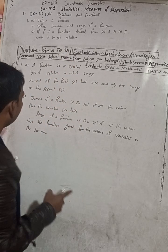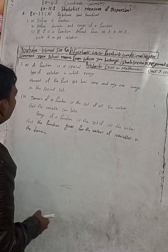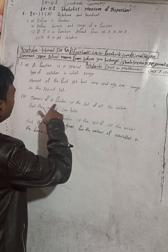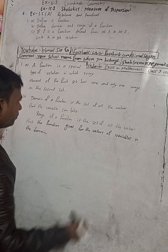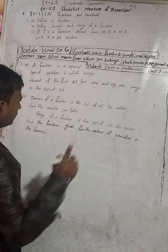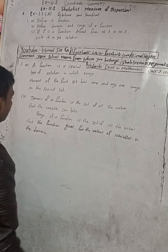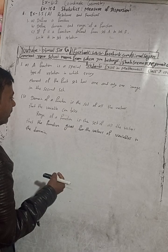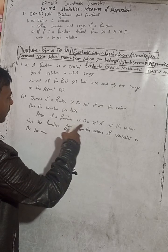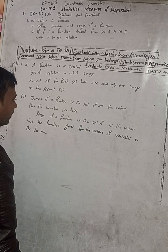To recap: the domain of a function is the set of all the values that the variable can take. The range of a function is the set of all the values that the function gives for the values of variables in the domain.